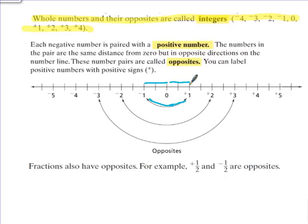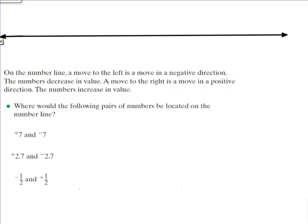You can label positive numbers with positive signs and negative numbers with negative signs. Okay, at this time I'd like for you to draw a number line in your journal and what we want to do is think about what happens on a number line when we move to the left and to the right.